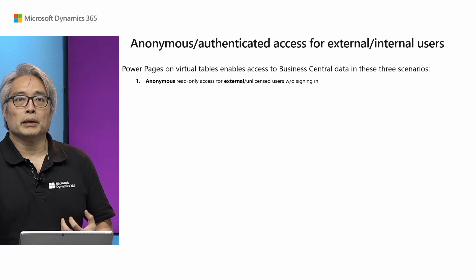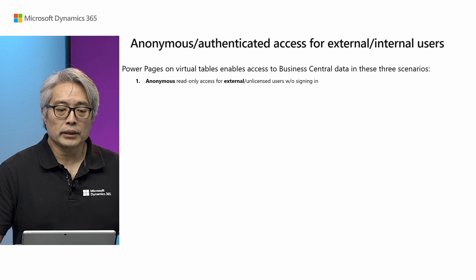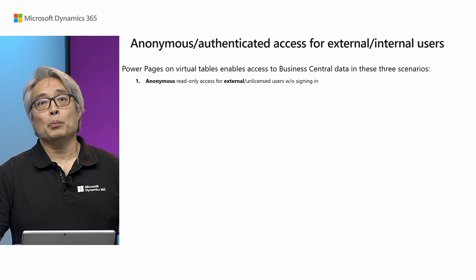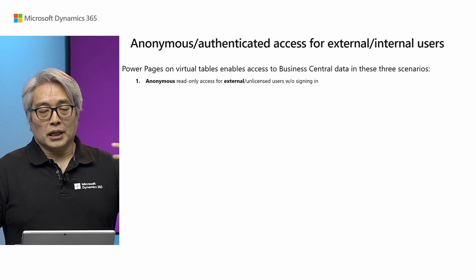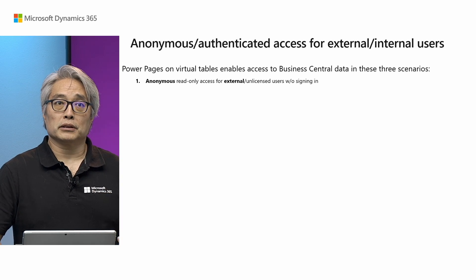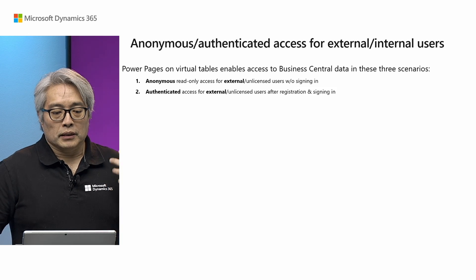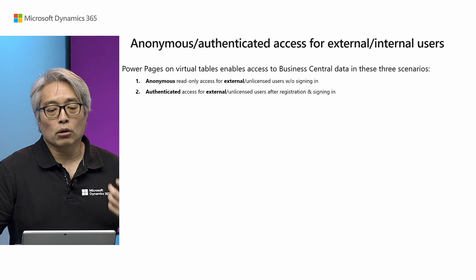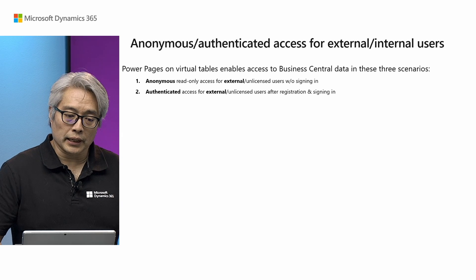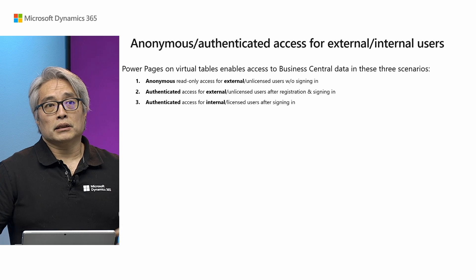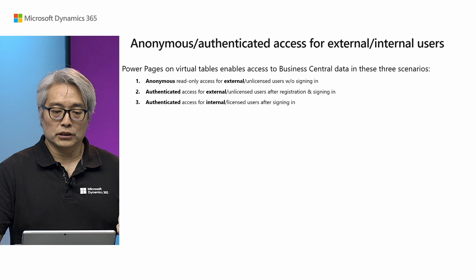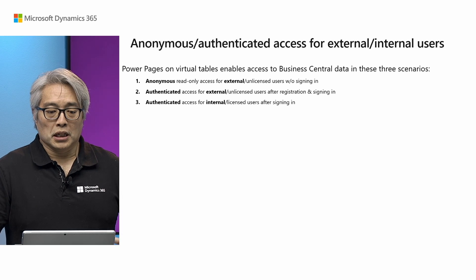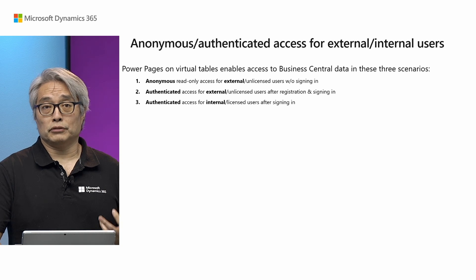There are three scenarios enabled by this feature. First is anonymous read-only access for external or unlicensed users without signing in — Power Pages allows you to create a B2B portal where customers don't have to sign in and can see Business Central data even without a license. The second type is authenticated access for external or unlicensed users after registration and signing in. The third type is authenticated access for internal or licensed users after signing in — this is essentially the same as Business Central Virtual Tables, where you must be licensed to access them in Dataverse.